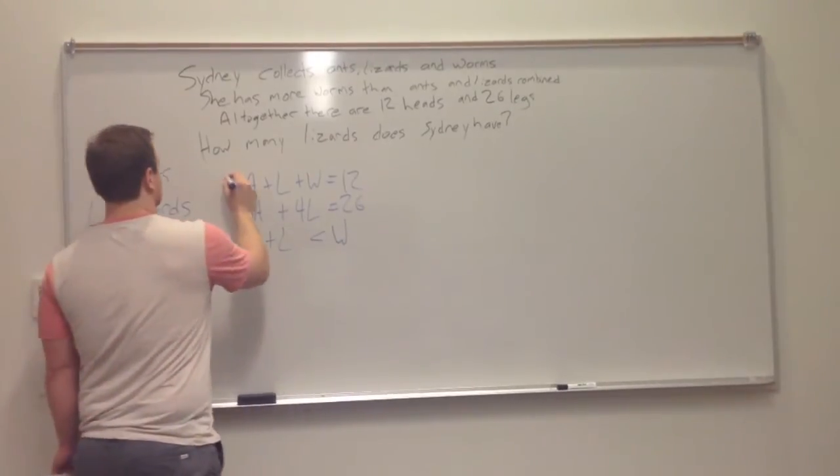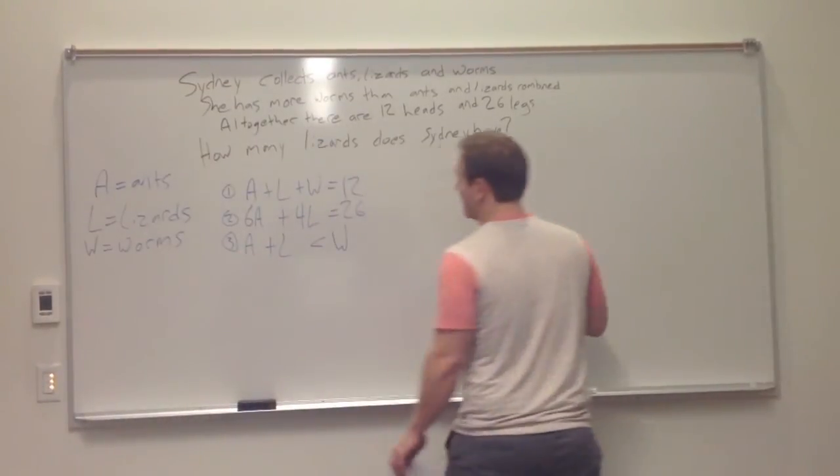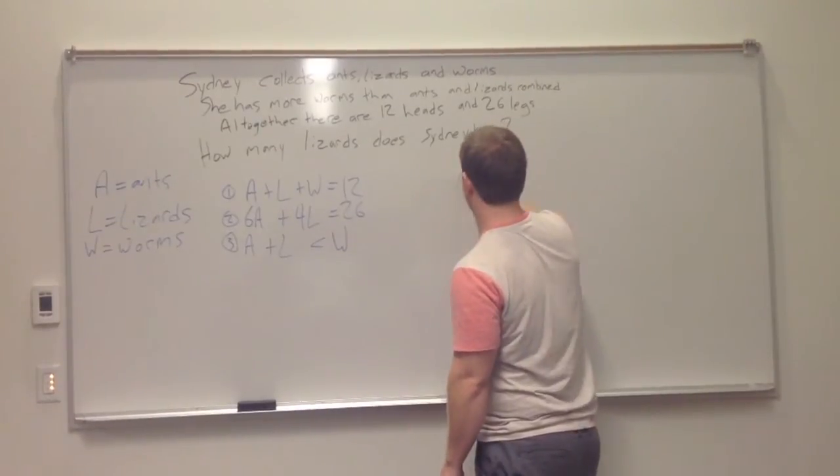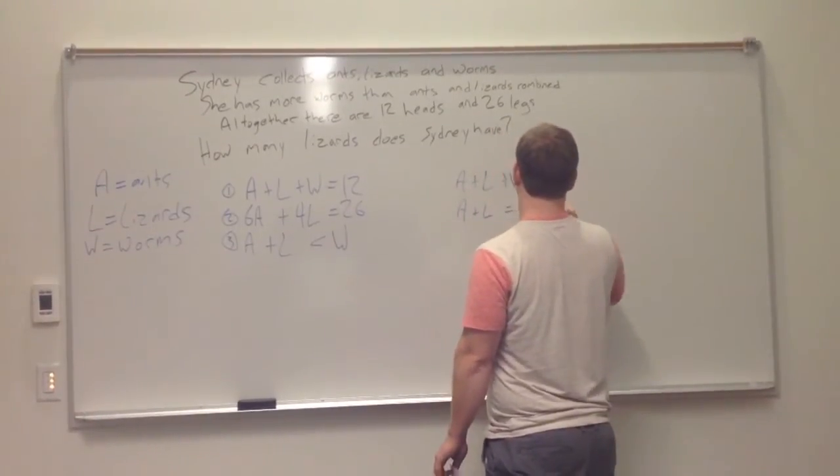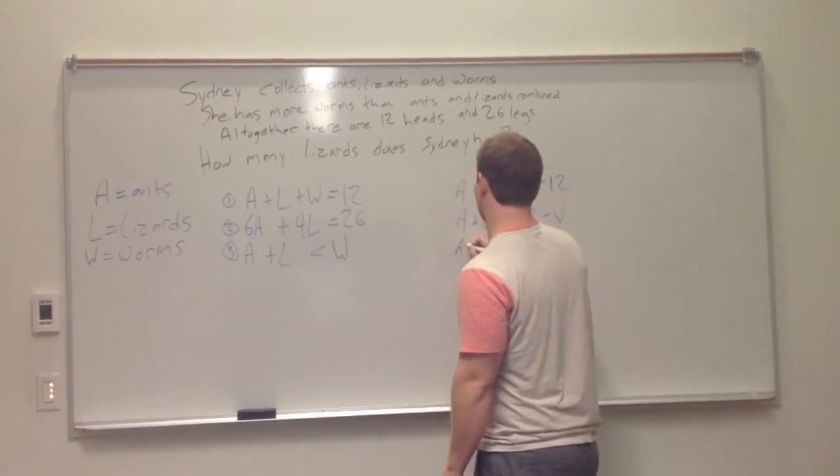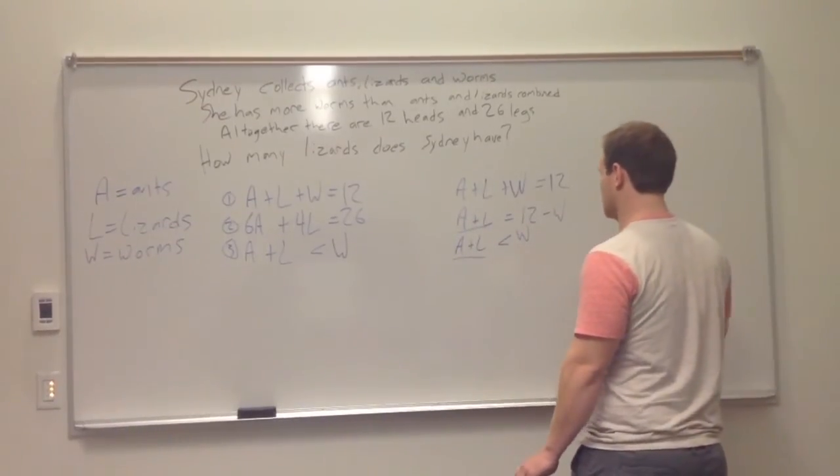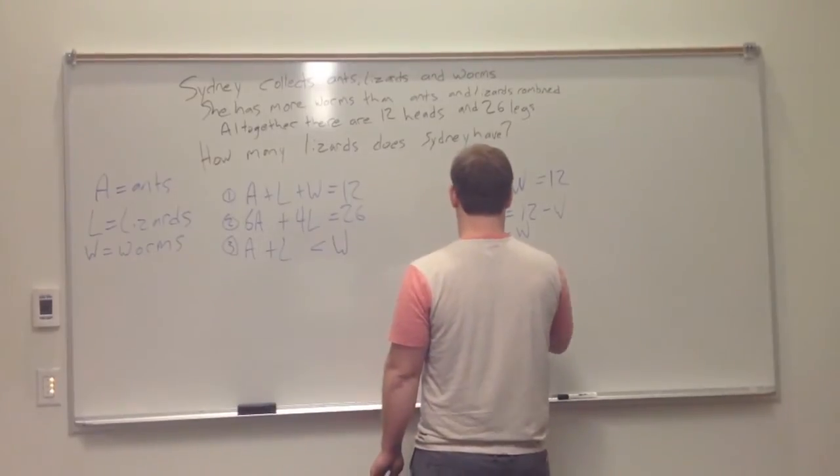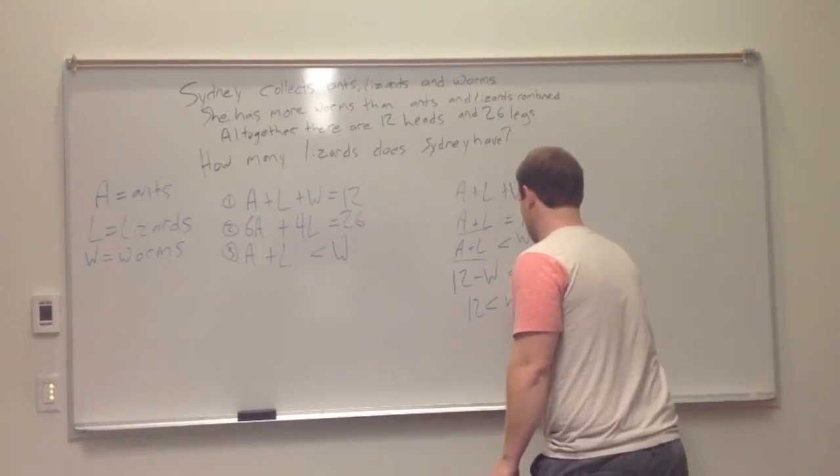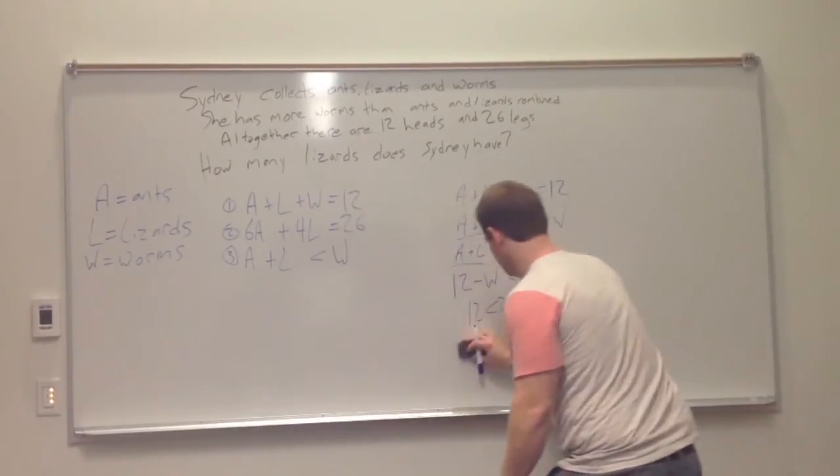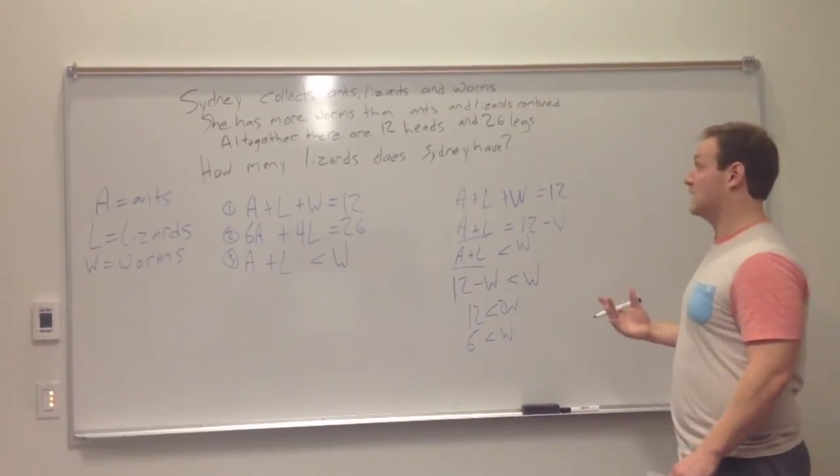Now we have the three equations, 1, 2, and 3. We need to use these in order to solve the question. So first we're going to take equation number 1 and number 3 and make some things equal to each other. So A + L + W = 12. A + L = 12 - W. And then we also can see that A + L < W. So with A + L on both the left hand side equations, we combine the two equations to give us 12 - W < W. And this simplified gives us 12 < 2W, so W > 6. So there are more than 6 worms. Sydney has more than 6 worms.